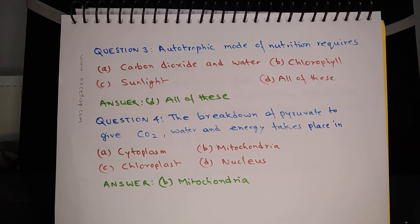Question 3: Autotrophic mode of nutrition requires carbon dioxide and water, chlorophyll, sunlight, or all of these. The answer is all of these because carbon dioxide is required for photosynthesis, water is required, sunlight is necessary for supplying energy, and chlorophyll converts and utilizes solar energy for photosynthesis.